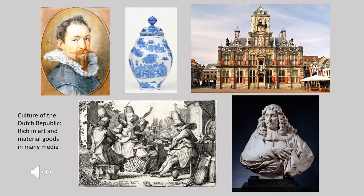The material culture of the Dutch Republic was rich in media such as architecture, printmaking, sculpture, porcelain, tapestry, and other kinds of luxury goods as well as painting. For the purposes of this presentation, we're going to focus on painting. When we get to Rembrandt, it is important to note that he was also an extraordinary printmaker, though we're not going to talk about that aspect of his work in this lecture.